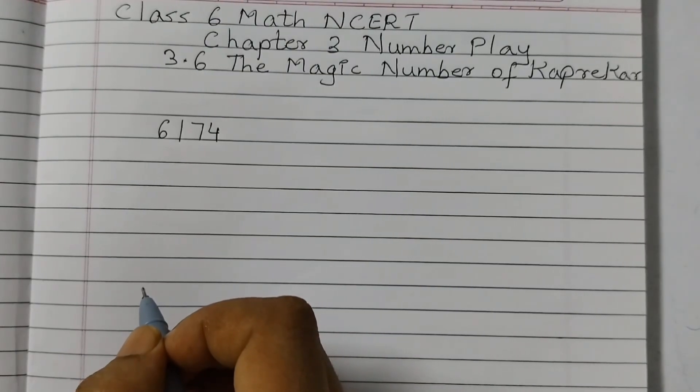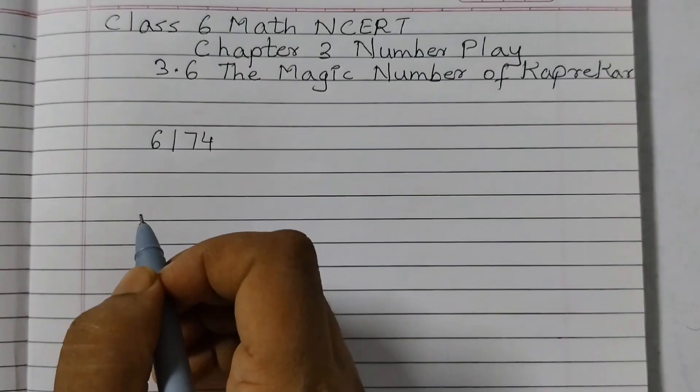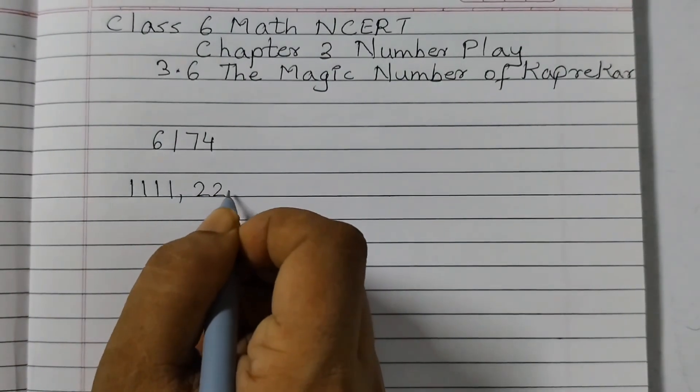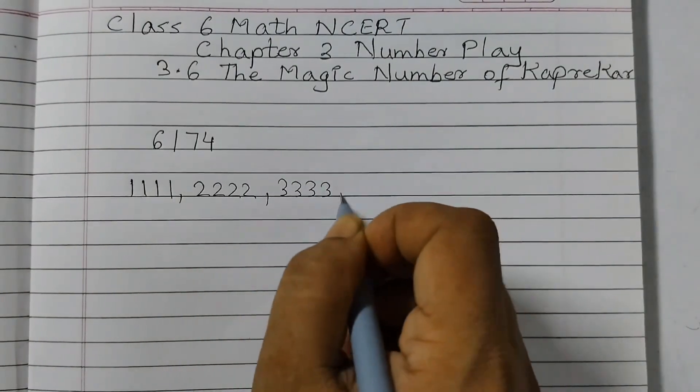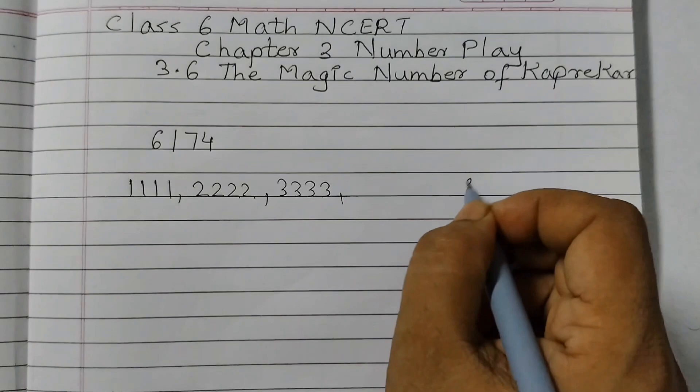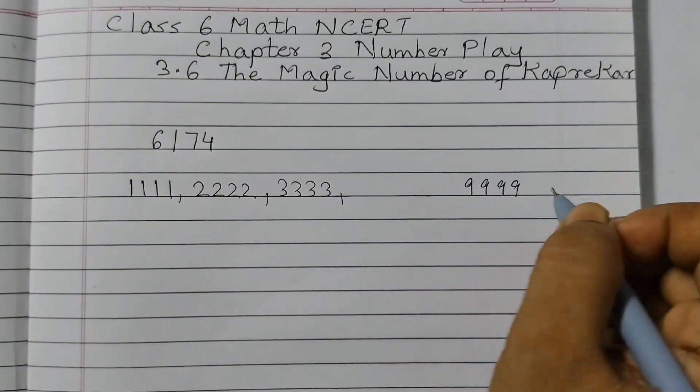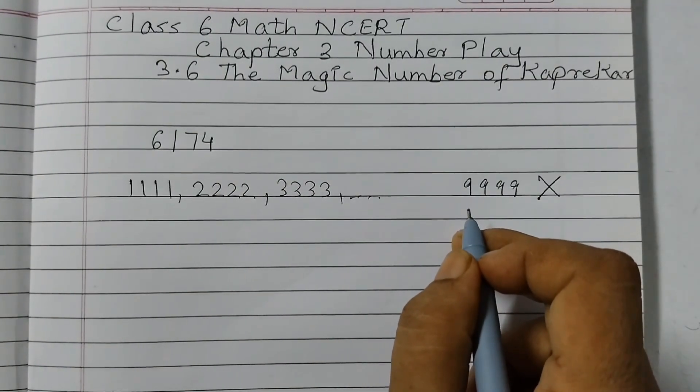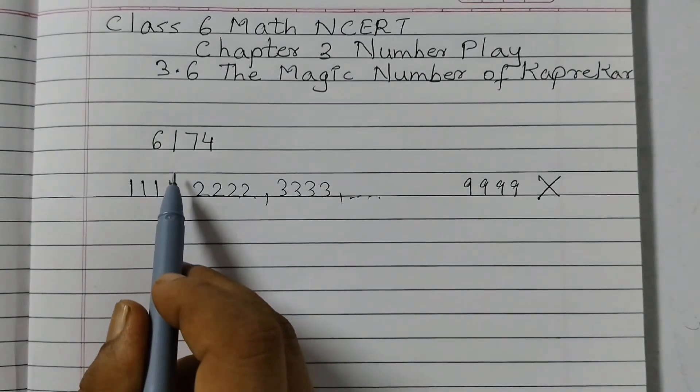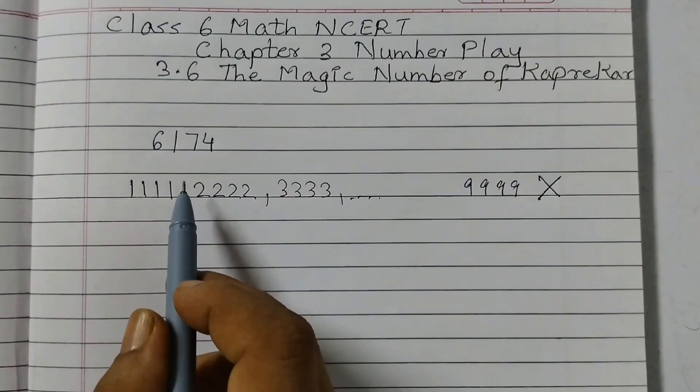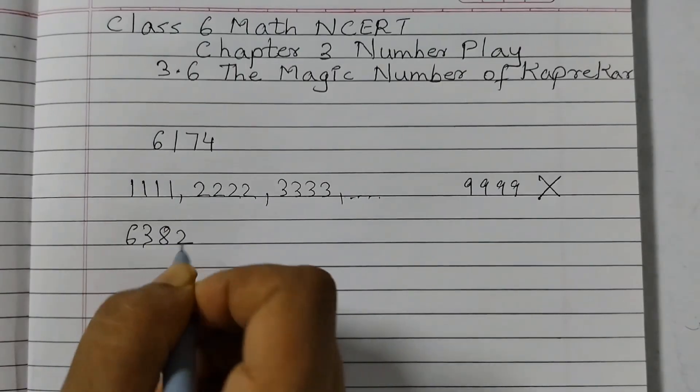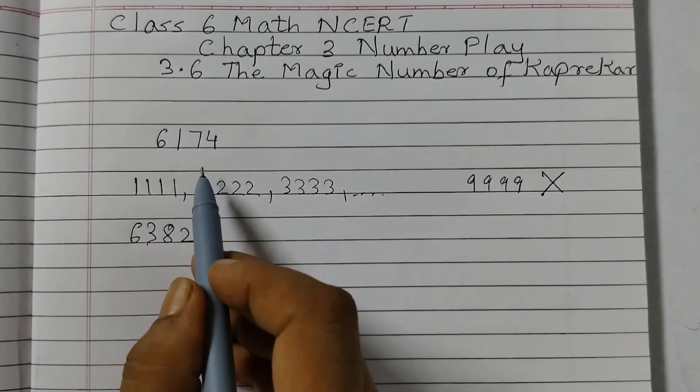Let us understand why this number is called a magic number with a few examples. For this you can pick any 4 digit number except the numbers where all the digits are repeated. For example, 1111, 2222, 3333, and similarly 4444, 5555, 6666, 7777, 8888, 9999. We cannot use these numbers to get the magic number. Except these numbers, you can take any 4 digit number and you would always get this magic number which is 6174. Let us see the first example which is given in our textbook. The number taken is 6382.